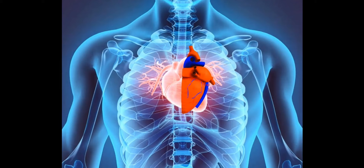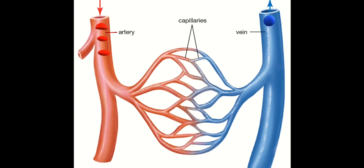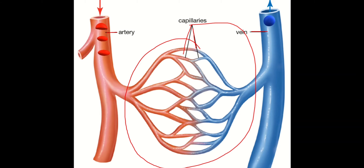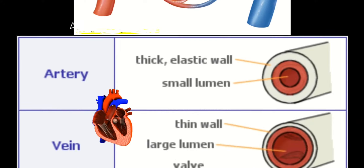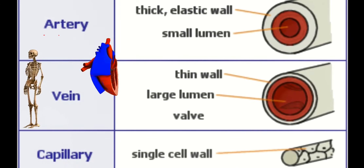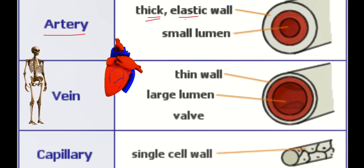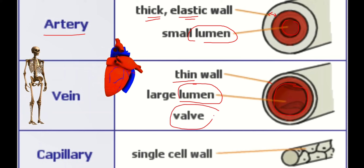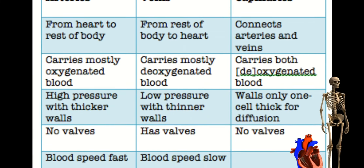Question number three: what is the difference between arteries, veins and capillaries? Here you can see — this is an artery, this is a vein, and this is a capillary. Arteries have a thick elastic wall, veins have a thin wall, and capillaries have a single cell wall. Arteries have a small lumen, while veins have a large lumen. Veins have valves, while arteries and capillaries do not.